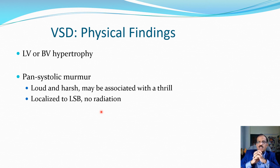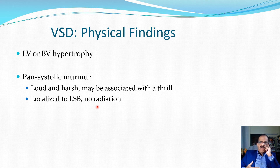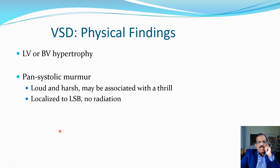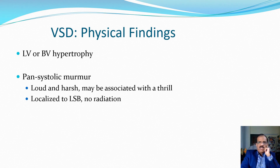The murmur of tricuspid regurgitation is also heard in the same area and does not radiate, but it has special features such as a pulsatile liver and engorged neck veins, which do not develop in simple VSD. These clinical features should enable you to differentiate the murmur of VSD from murmurs of mitral regurgitation and tricuspid regurgitation.